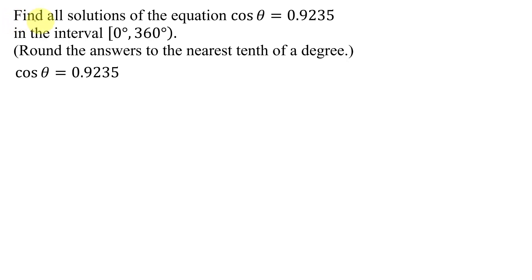In this example, I need to find all solutions of the equation cosine of theta equals 0.9235, and the solutions need to be in the interval 0 degrees to 360 degrees. I also need to round the answers to the nearest tenth of a degree. This value 0.9235 is not a value on the unit circle, so I'm going to have to solve this problem using a calculator.